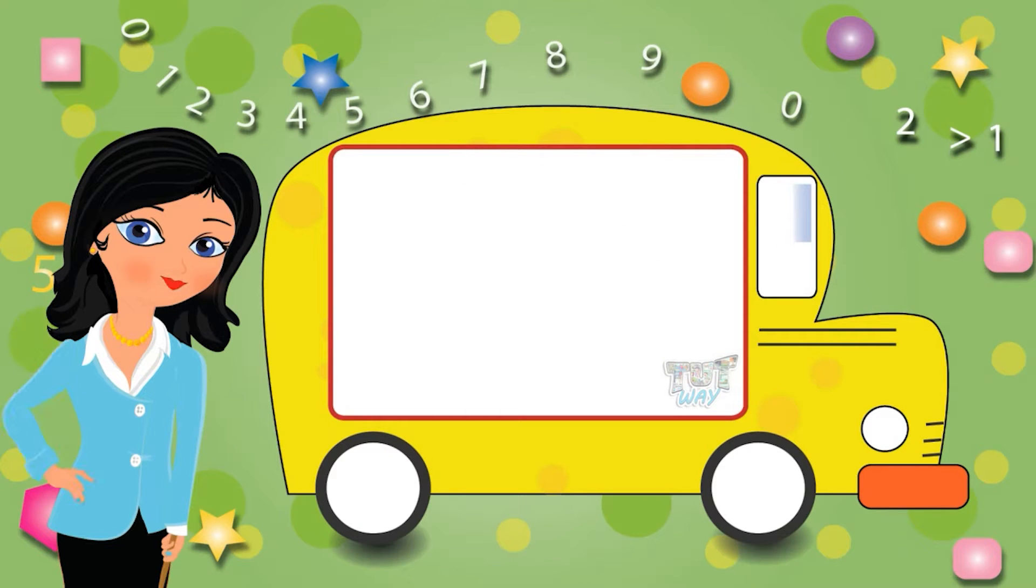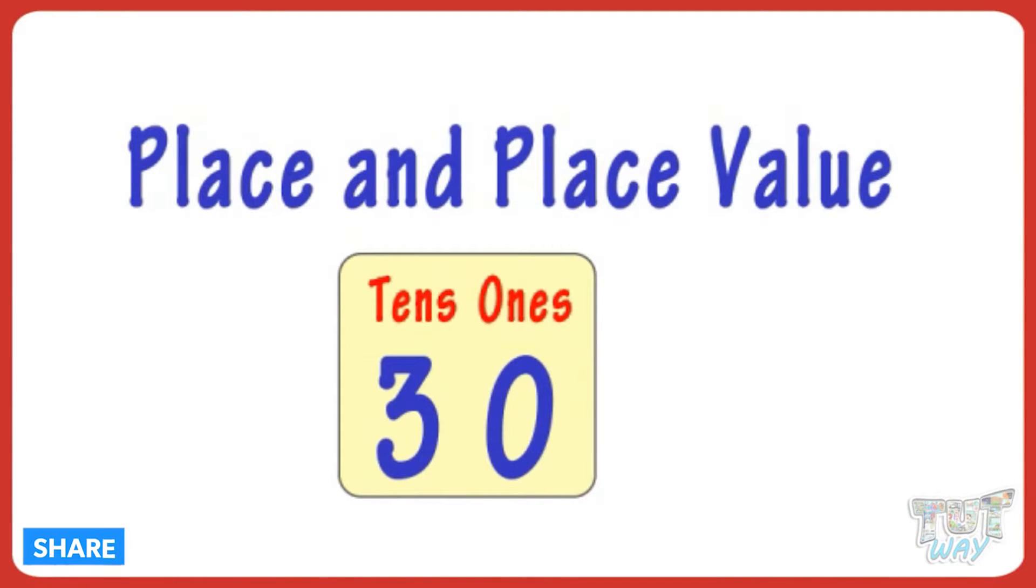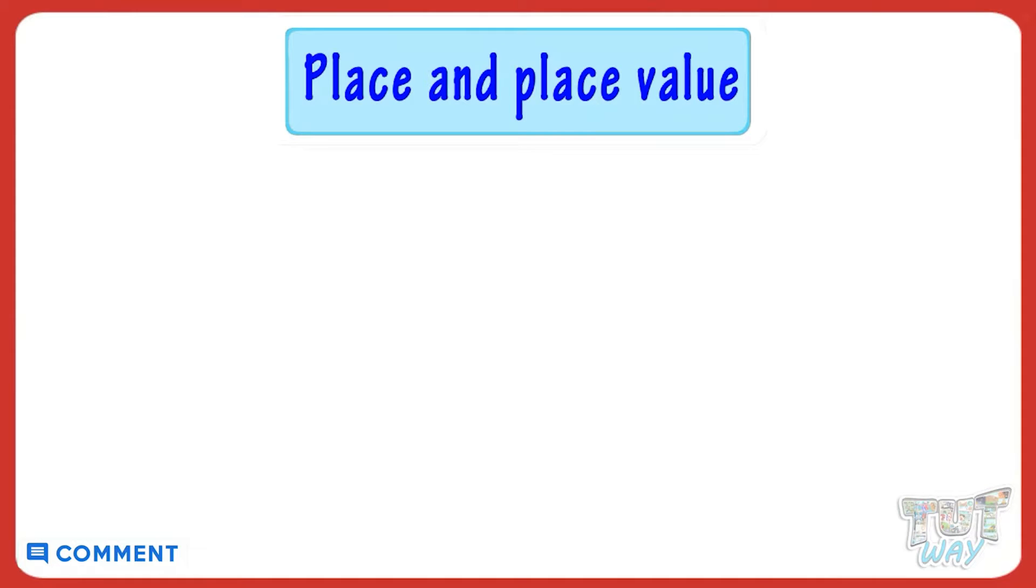Hi kids, today we will learn what is place and place value of a digit in a number. So let's get started. Place is the position of the digit in a number. For example, here we have a number.